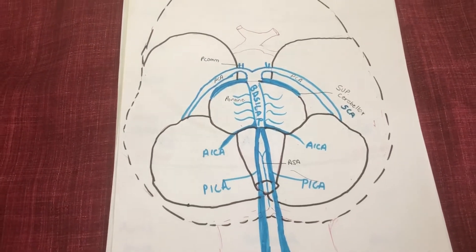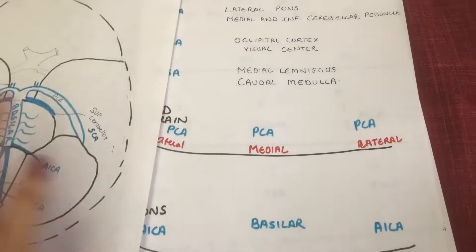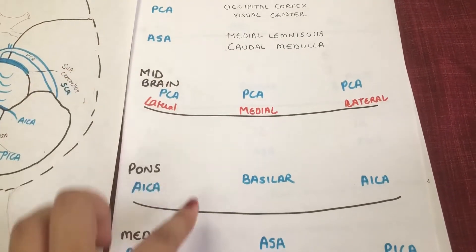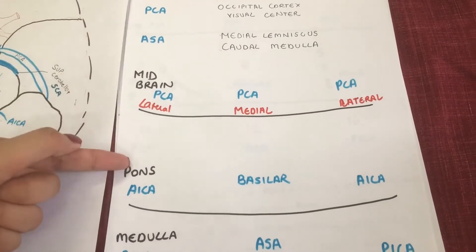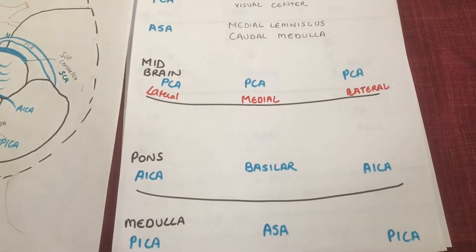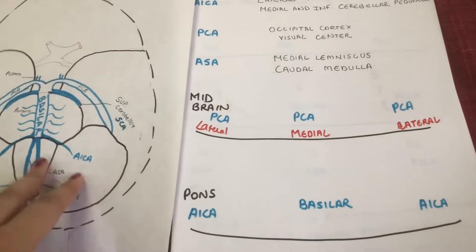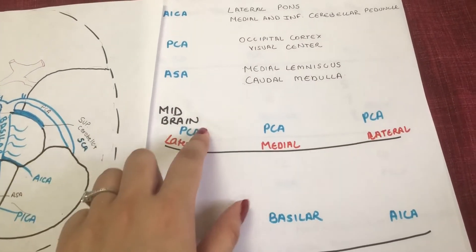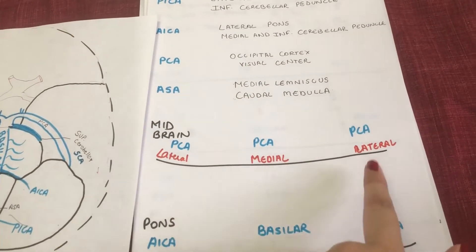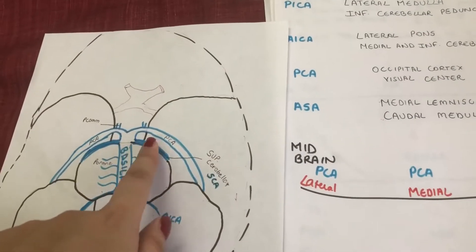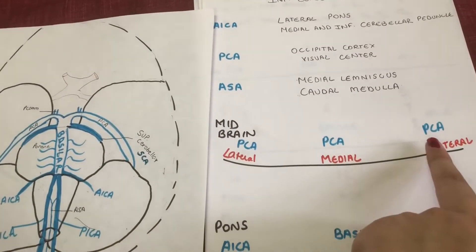Before we can discuss all the effects in detail, I want you guys to draw these two lines right here and add the midbrain section, the pons, and the medulla. Then fill in the arteries as we discussed in this diagram. In the midbrain you have the lateral and medial aspects, and you only have one artery here, known as the PCA.